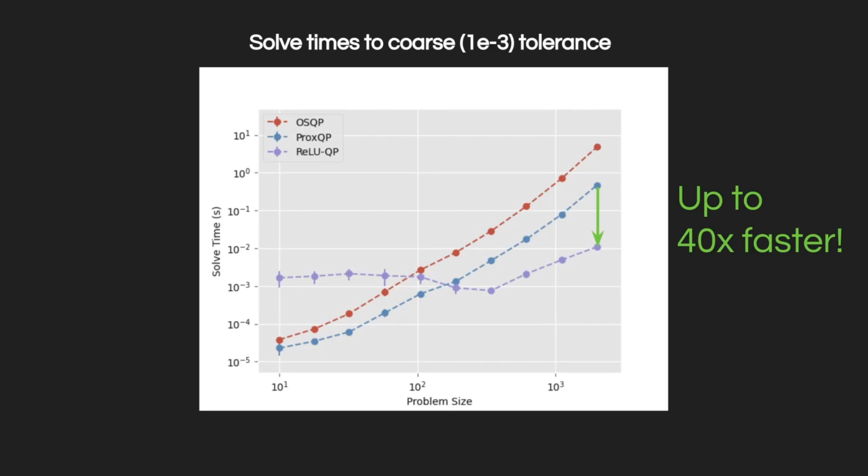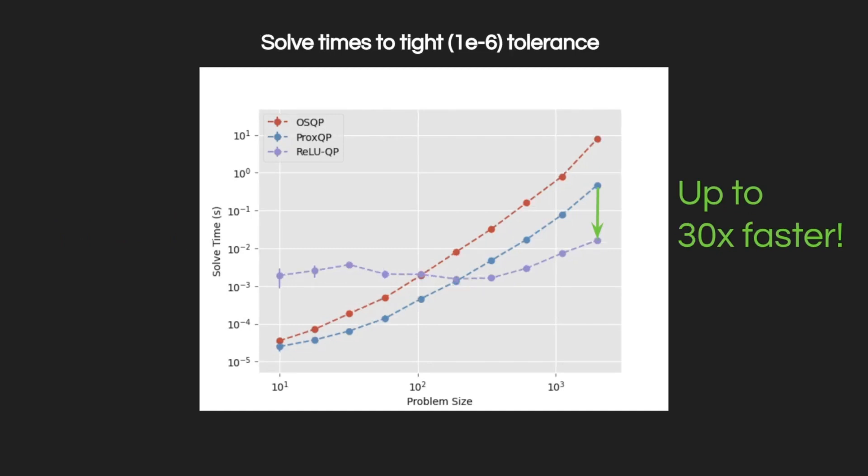And when solving to tight tolerances, RELUQP was competitive on medium-sized problems and up to 30 times faster on large problems.